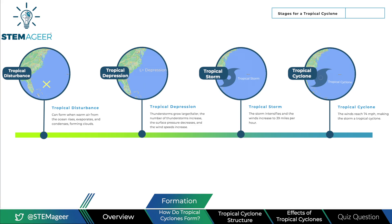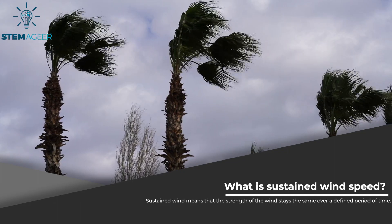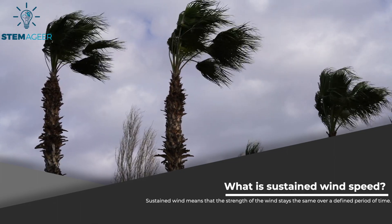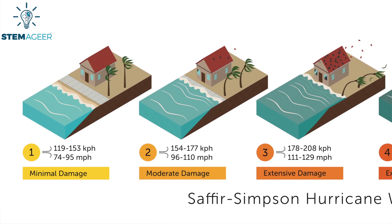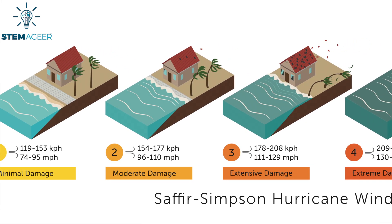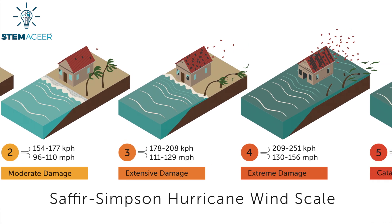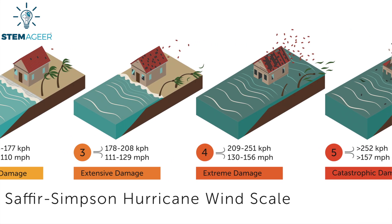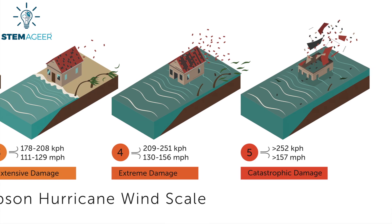Finally, if the winds reach 74 mph, the storm officially becomes a tropical cyclone. After forming, tropical cyclones can increase in intensity and are given a rating based on their maximum sustained wind speed — meaning the wind strength stays the same over a defined period of time. Meteorologists use the Saffir-Simpson scale, which rates tropical cyclones from 1 to 5, with category 1 being the weakest and category 5 the strongest. When tropical cyclones move over land, they lose access to their fuel source of warm, moist ocean air, and begin to weaken.